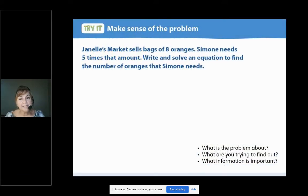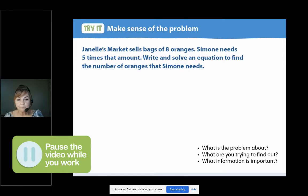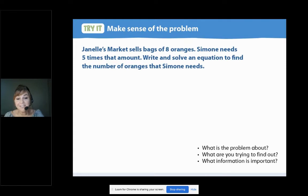We're going to start by making sense of the problem. Janelle's Market sells bags of eight oranges. Simone needs five times that amount. Write and solve an equation to find the number of oranges that Simone needs. Hmm, what's this problem about? Pause the recording and write what you think this problem is about.